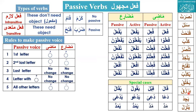If you know how passive voice is made in English it is easier to translate. Yarzuqu means 'he provides' and the passive yurzaqu means 'he is provided' or 'he will be provided.' Yunzilu — from anzala yanzilu — passive becomes yunzalu.